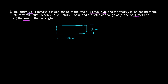The length x of a rectangle is decreasing, meaning dx over dt is negative, given as minus 3 cm per minute. In every 1 minute, 3 cm is decreasing. And similarly, y is increasing at the rate of 2 cm per minute.